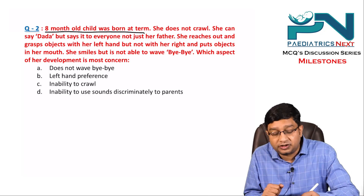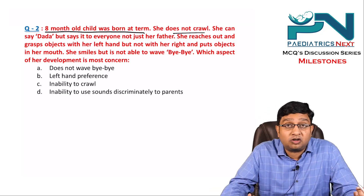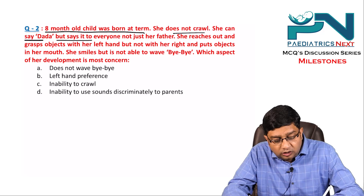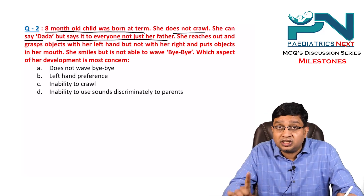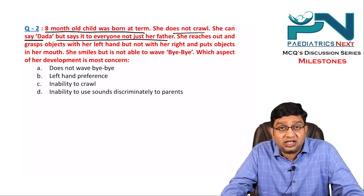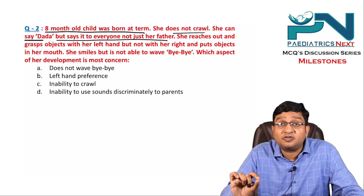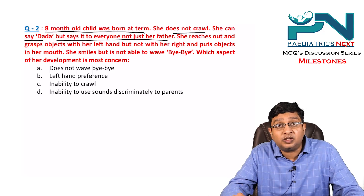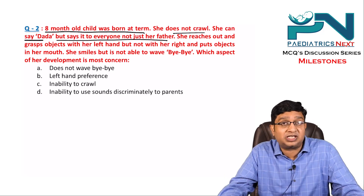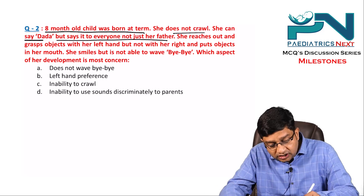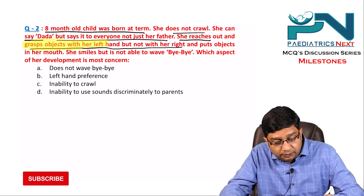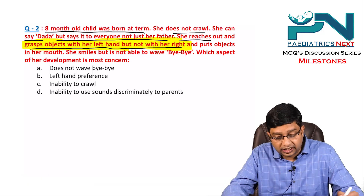Question 2: An 8-month-old term child does not crawl — normal crawling comes at 8 months. She can say 'dada' but says it to everyone, not just her father. Bisyllables appear at 9 months, and saying 'dada' or 'baba' indiscriminately to anyone is very normal at this age, so language development is okay. She reaches out and grasps objects with her left hand but not her right.